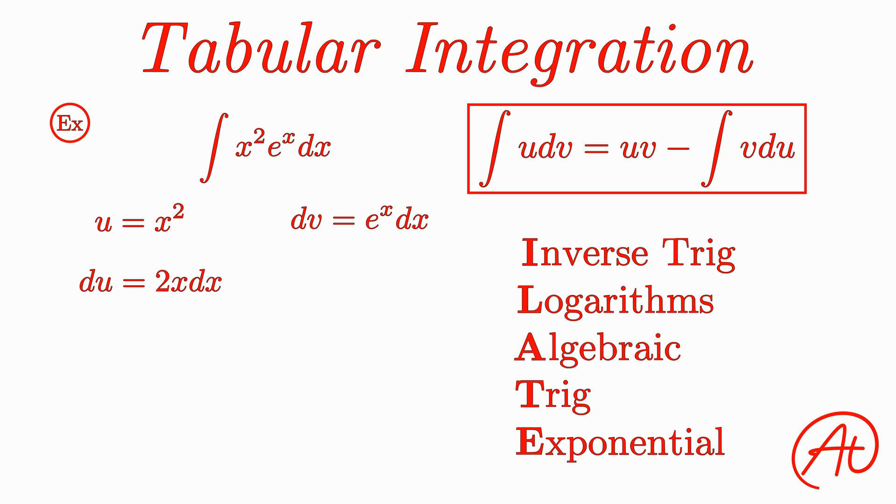Next we find v by integrating both sides of the dv equation. Since the integral of e to the x is just itself, we find that v is equal to e to the x as well.